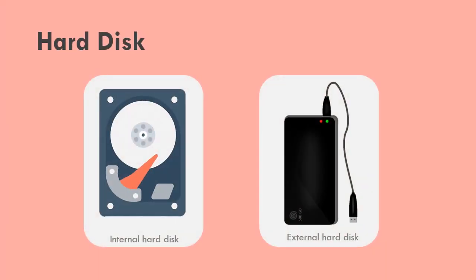Hard disk. A hard disk consists of a magnetized platter and a moving metal head. There are two different types of hard disks: internal hard disks and external hard disks.